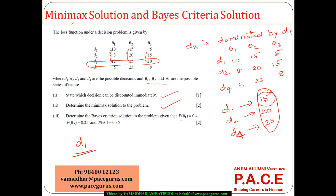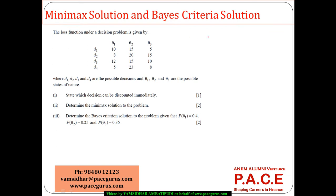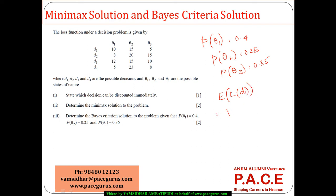Now determine the Bayes criteria solution to the problem, where the probability of theta1 is 0.4, probability of theta2 is 0.25, and probability of theta3 is 0.35. The expected loss of D1 is computed as: probability of theta1 times loss of D1 under theta1, and so on. So expected loss of D1 = 0.4 times 10 plus 0.25 times 15 plus 0.35 times 5.